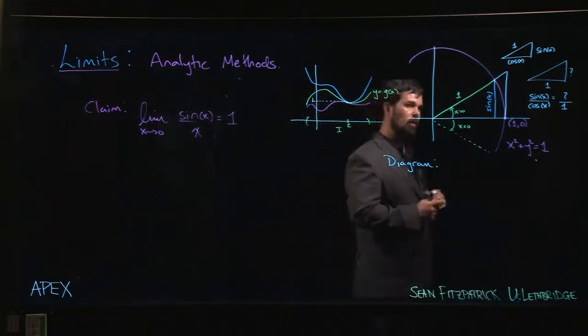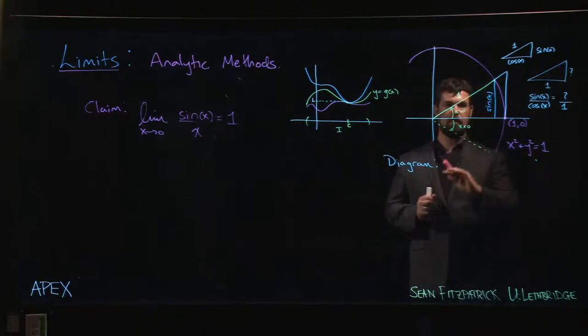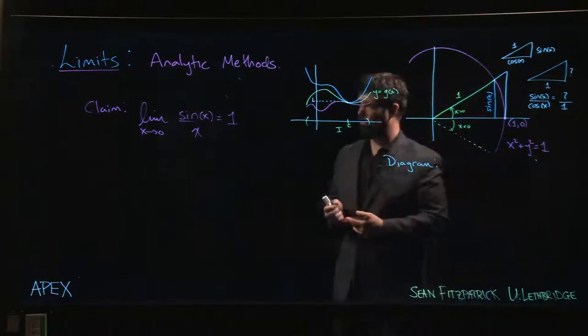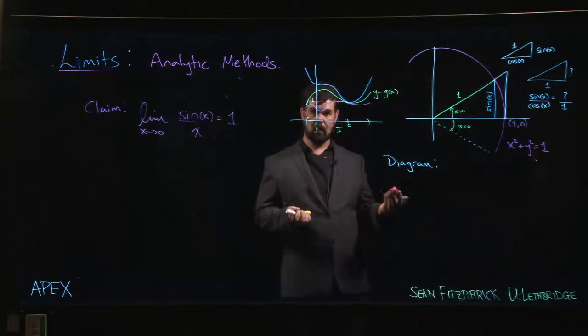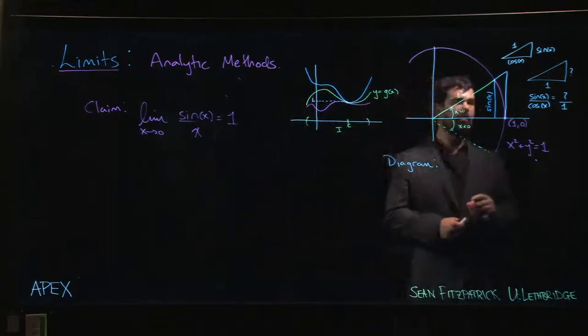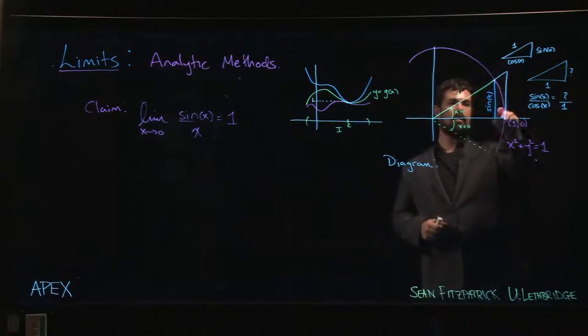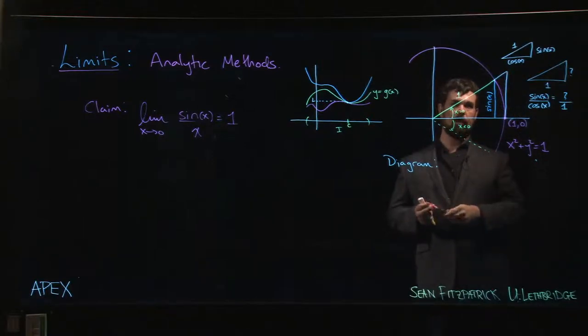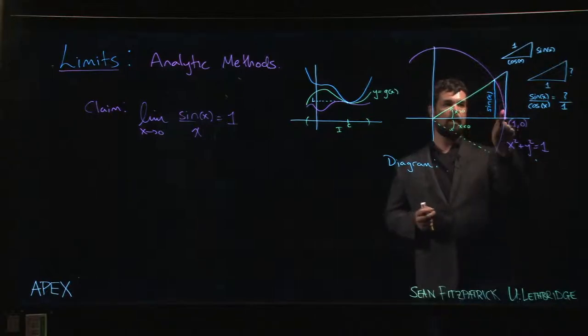We're going to use this same setup that we used before. Here's that diagram we had for showing that sin(x) is always less than or equal to x. We used that to show the limit of sin(x) as x goes to 0 is 0, and from there we showed that sine can always be evaluated by direct substitution. Now what we've done is we've extended the triangle a little bit to this vertical side.